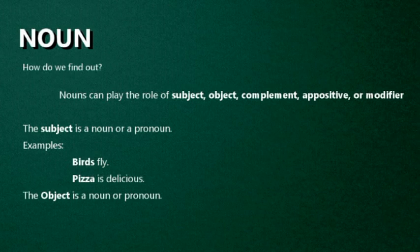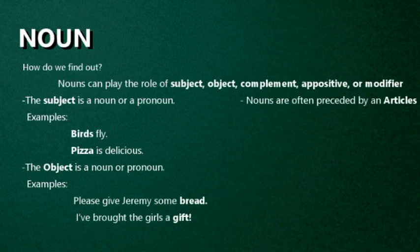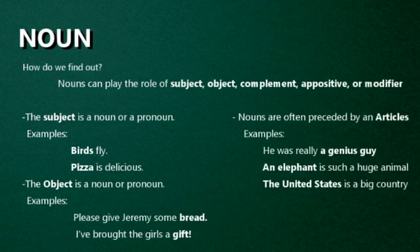Nouns and pronouns can also play the role of object. For example: Please give Jeremy some bread. I have brought your girls a gift. So bread and a gift are the objects in the sentence. Nouns are also often preceded by an article — a, an, or the. For example: He was really a genius guy. An elephant is such a huge animal. The United States is a big country. So some nouns are often preceded by the article a, an, or the.